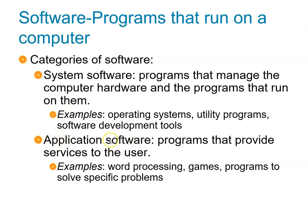The other category is application software — almost everyone is familiar with this. Application software refers to programs that provide services to the user, such as word processing software, all the apps you see on your phone, games, and programs that solve specific problems like calculators. Those are all application software.